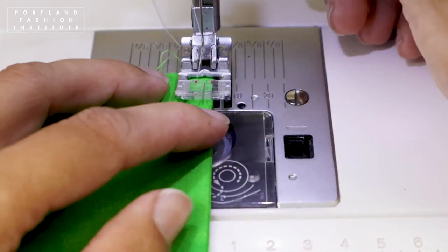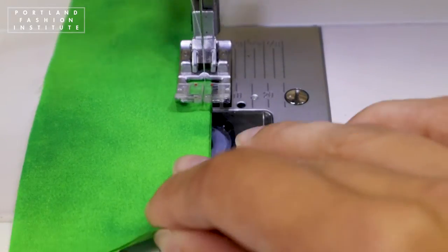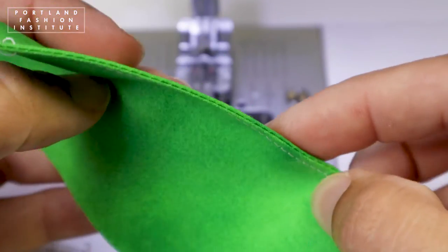Stitch from the right side using a regular stitch length 1/8 of an inch away from the edge. That's an edge stitch.